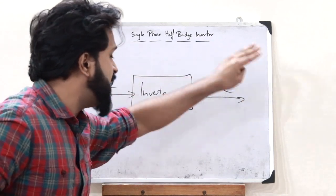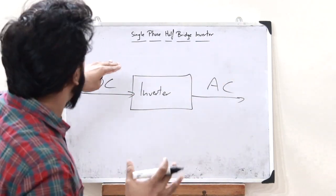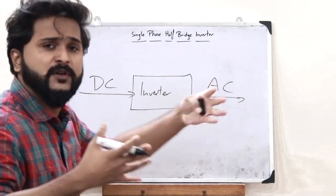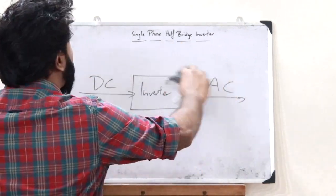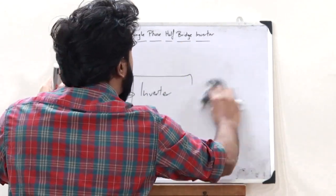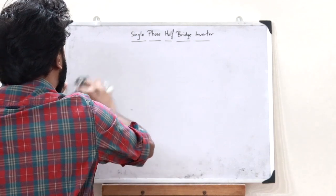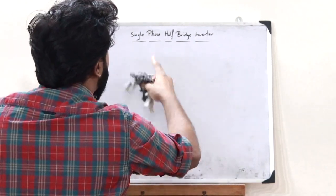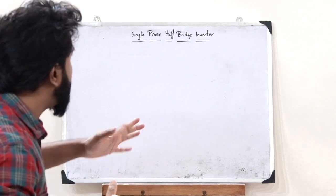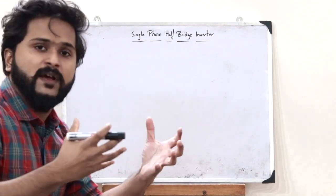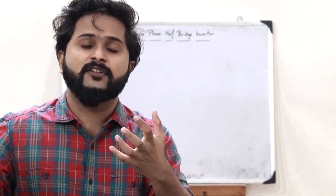So drawing a basic diagram, if this is an inverter, it is a device that converts DC electricity to AC electricity — as simple as that. So this is what you refer to as an inverter. Now, to understand the term single-phase half-bridge inverter, let's construct the simple circuit diagram of one. We saw that an inverter is a device that converts DC electricity to AC electricity.